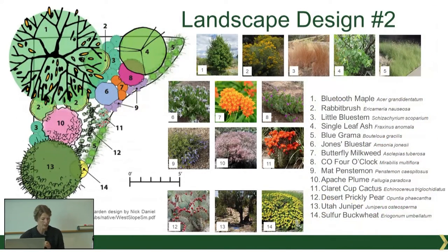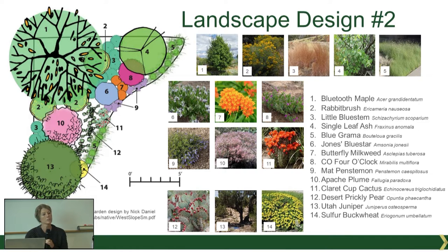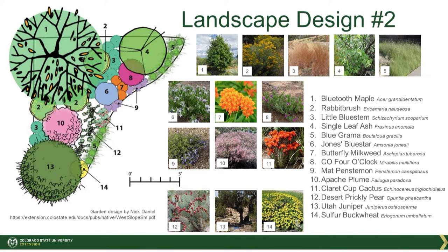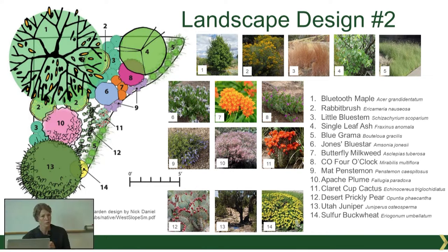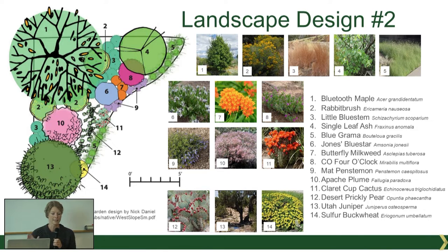Here's another design. Of course your property is probably not this exact shape, so you could modify it — it gives you an assortment of plants that grow well together, look well together, and then you can fit it to your property. The Colorado Master Gardener website through CSU Extension also has wonderful plant lists. So if you're looking for a drought-tolerant, evergreen, native tree, there's a list. Or if you're looking for a spring-blooming xeric flower, they have lists of flowers.